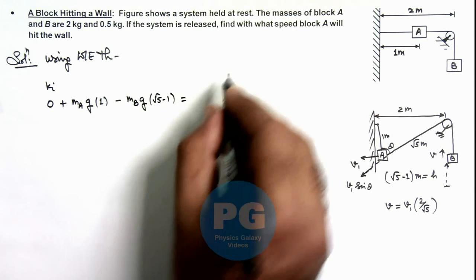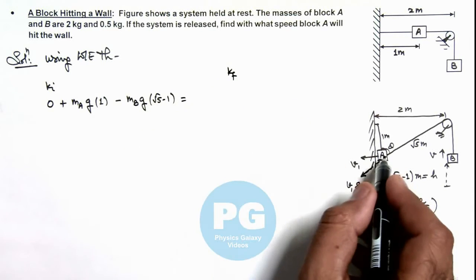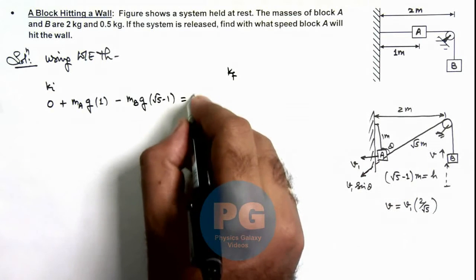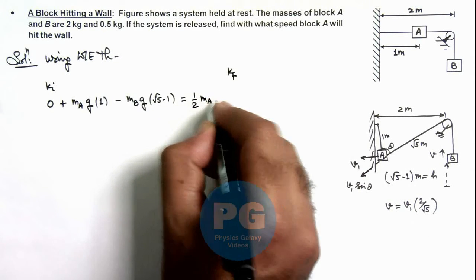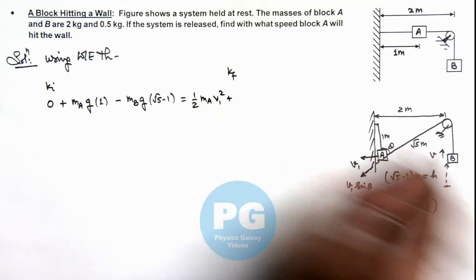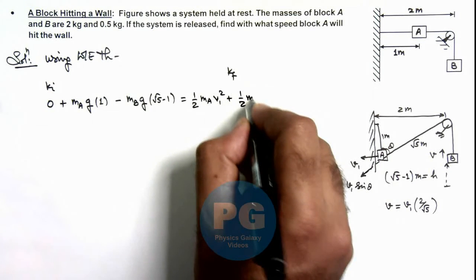And this should be equal to the final kinetic energy of the system. For block A we can write it is half mA v1 square, plus for block B it is half mB v square.